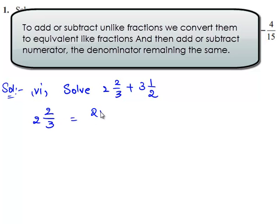So this can be written as 2 times 3 plus 2 divided by 3, which is equal to 8/3.